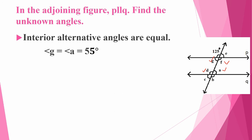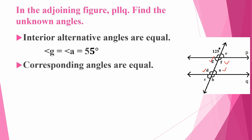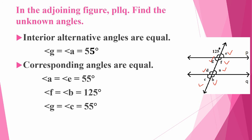Still remaining are C, B, and E. Using corresponding angles: for the 125 degree angle, the corresponding angle B is also 125 degrees. For angle G which is 55 degrees, the corresponding angle C is also 55 degrees. Now we have found all the angles using the properties.